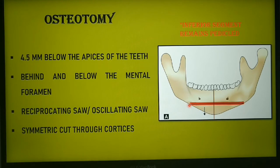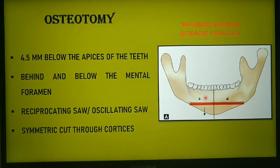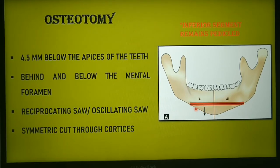The osteotomy cut is made at least 4.5 millimeters below the apices of the anterior teeth. This osteotomy is also at least 10 to 15 millimeters above the inferior border — the distance from the osteotomy cut to the inferior border should be at least 10 to 15 millimeters.